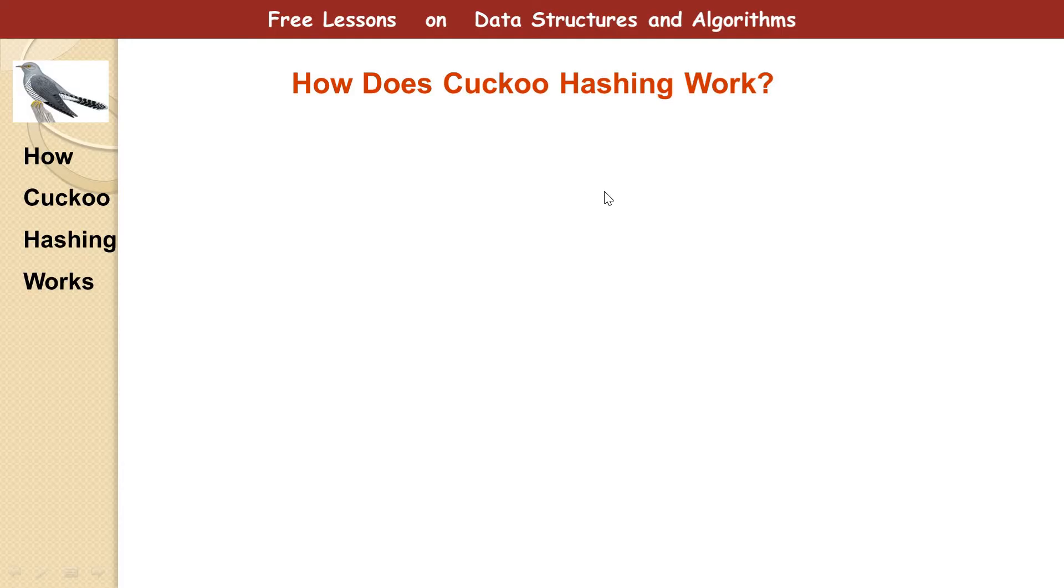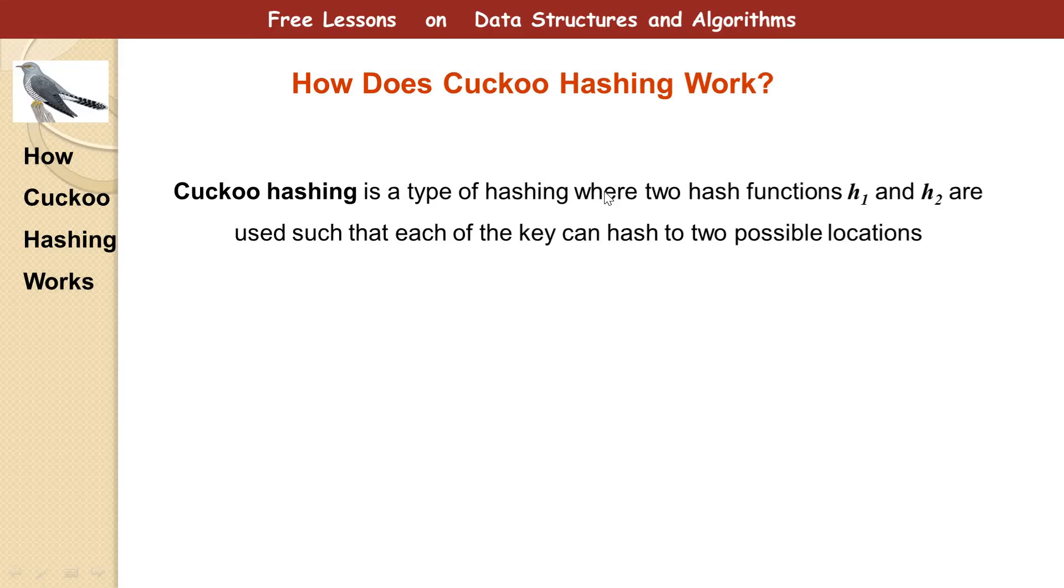Alright, first I want to just give you this boring definition. Cuckoo Hashing is a type of hashing where two hash functions h1 and h2 are used such that each of the keys can hash into two possible locations in the hash table. So in Cuckoo Hashing there are two hash functions h1 and h2.